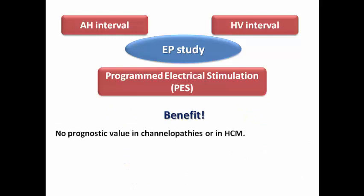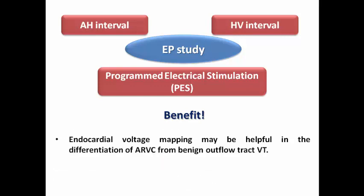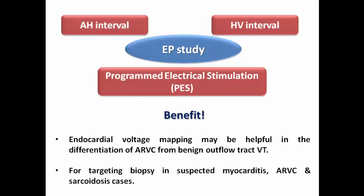There is currently no prognostic value for EP study in channelopathies or hypertrophic cardiomyopathy, but there may be evidence for its use in Brugada syndrome for risk stratification and ablation in the RVOT epicardium in patients with recurrent VT or VT storm, and it may have clinical implications in myotonic dystrophy. Endocardial voltage mapping can differentiate ARVC from benign outflow tract VT — idiopathic outflow tract VT has a single focus, while ARVC shows multiple foci from early scar formation. EP study can also guide targeted endomyocardial biopsy in suspected myocarditis, ARVC, and sarcoidosis.